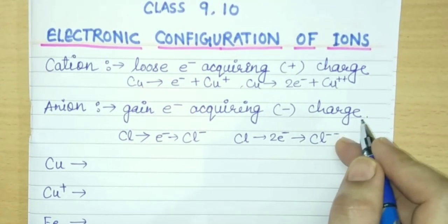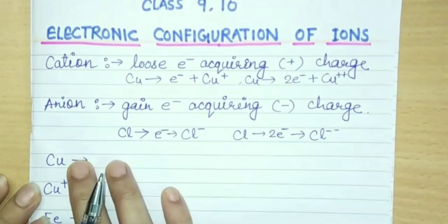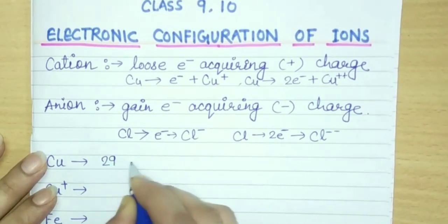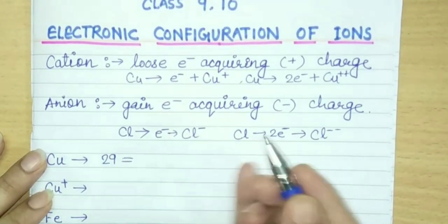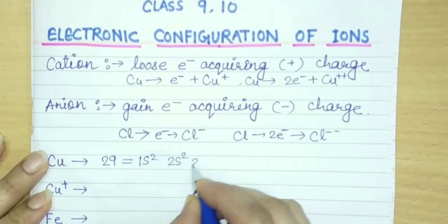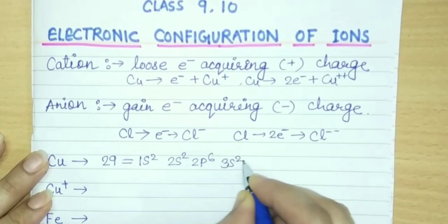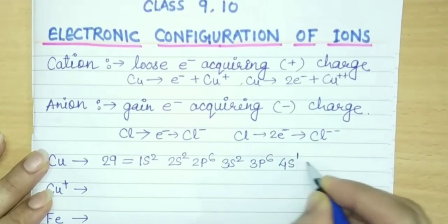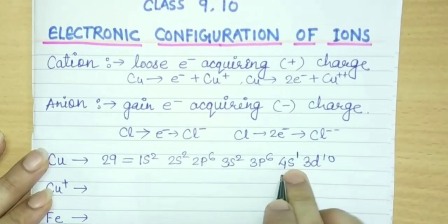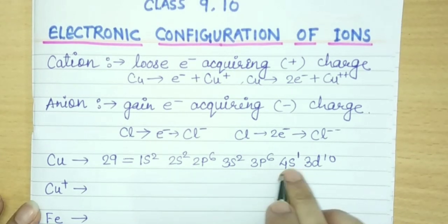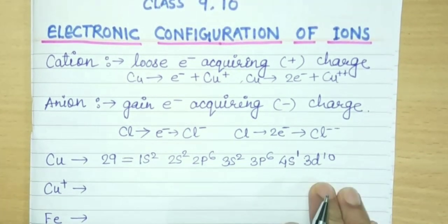Now come to copper. Copper has atomic number 29, and its configuration is 1s2 2s2 2p6 3s2 3p6 4s1 and 3d10. Why I have written 4s1 is already discussed in Aufbau principle. If you haven't seen that video, you can check in my playlist. So this we will not discuss here again. So this is the configuration of copper.